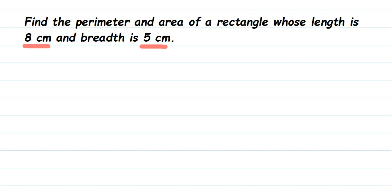We have to find the perimeter and the area of the rectangle. We'll directly use formulas to get the answer. Let's write down what we know from the question. Length equals 8 cm, and breadth equals 5 cm.